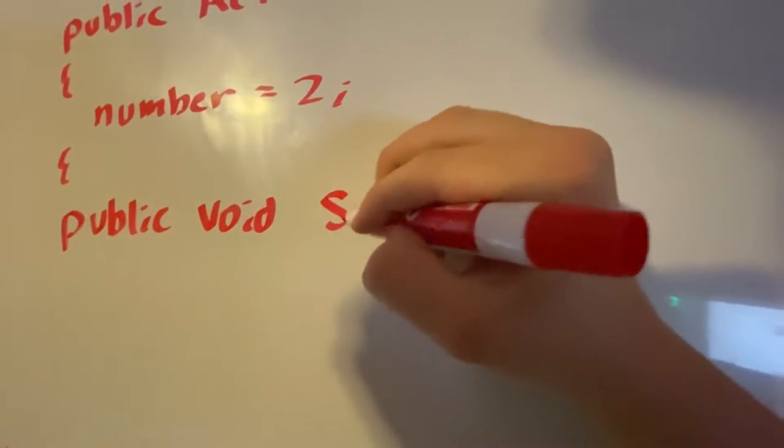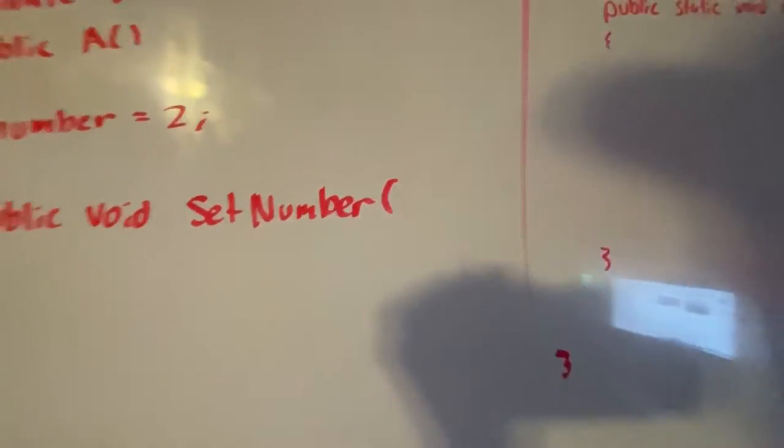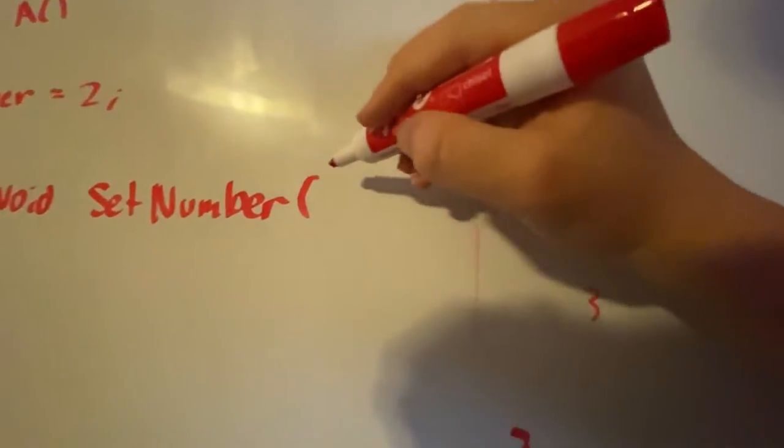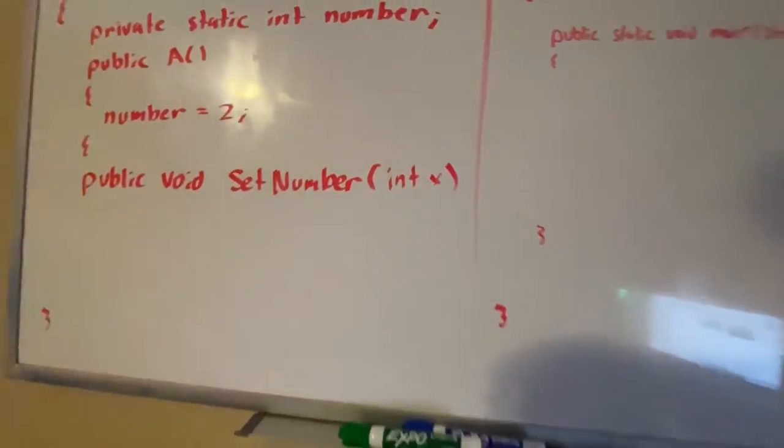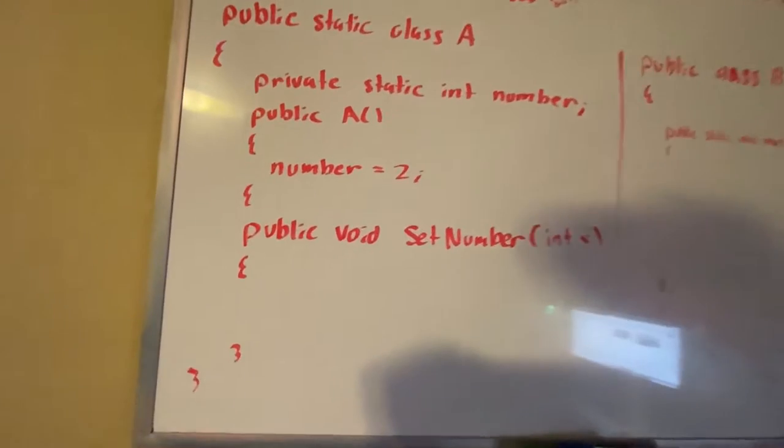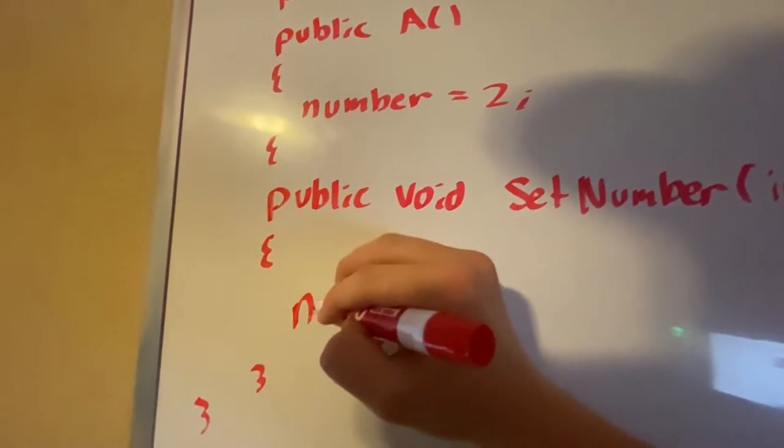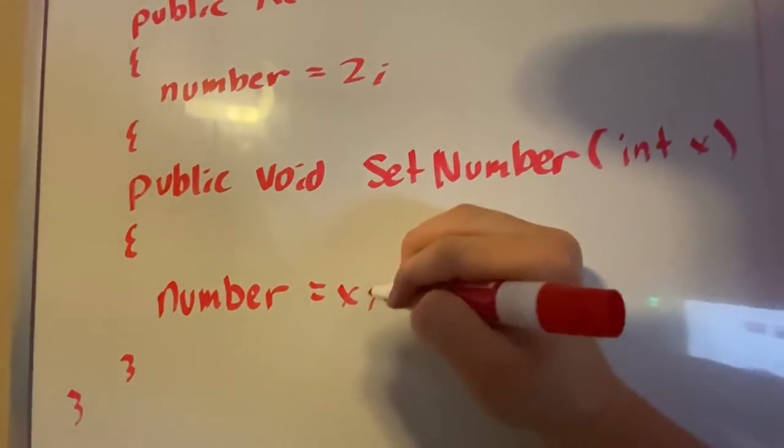Here we're going to make our method. We're just going to call it public void—it's void because we're not returning anything—public void SetNumber. Now this is different because we're going to be inputting a number, so we're just going to do int x. This can be named anything, so whatever you'd prefer.